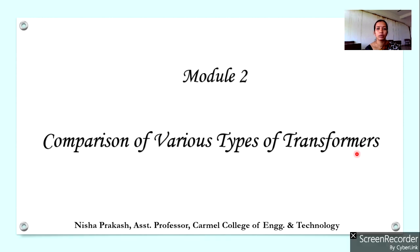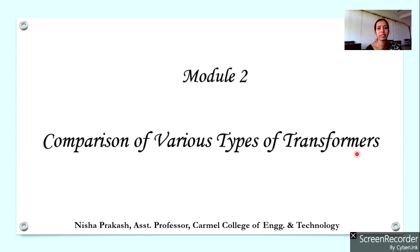Let us start with Module 2, which is the design of transformers. In this module we have to design the core, windings, as well as cooling systems for transformers. Before going into the detailed design, let us compare different types of transformers — single phase and three phase, core type and shell type, distribution and power transformers. Let us compare the similarities and differences between these transformer categories.